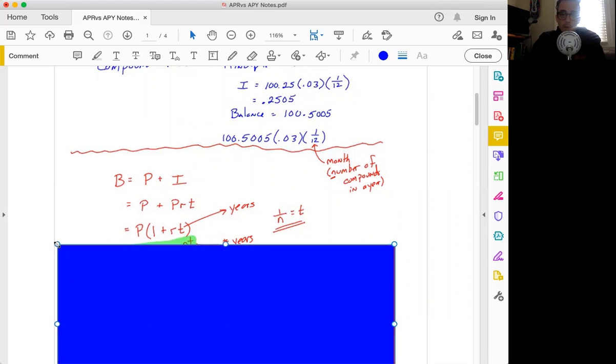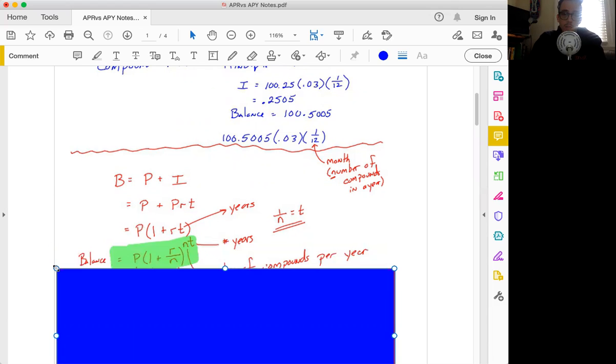So you might notice that these both have increments of principal. So if you want to get into the math of this, it's as if we're factoring out our principal. We're saying it's 1 plus the rate times time, where t is in years. And how can we take that further?